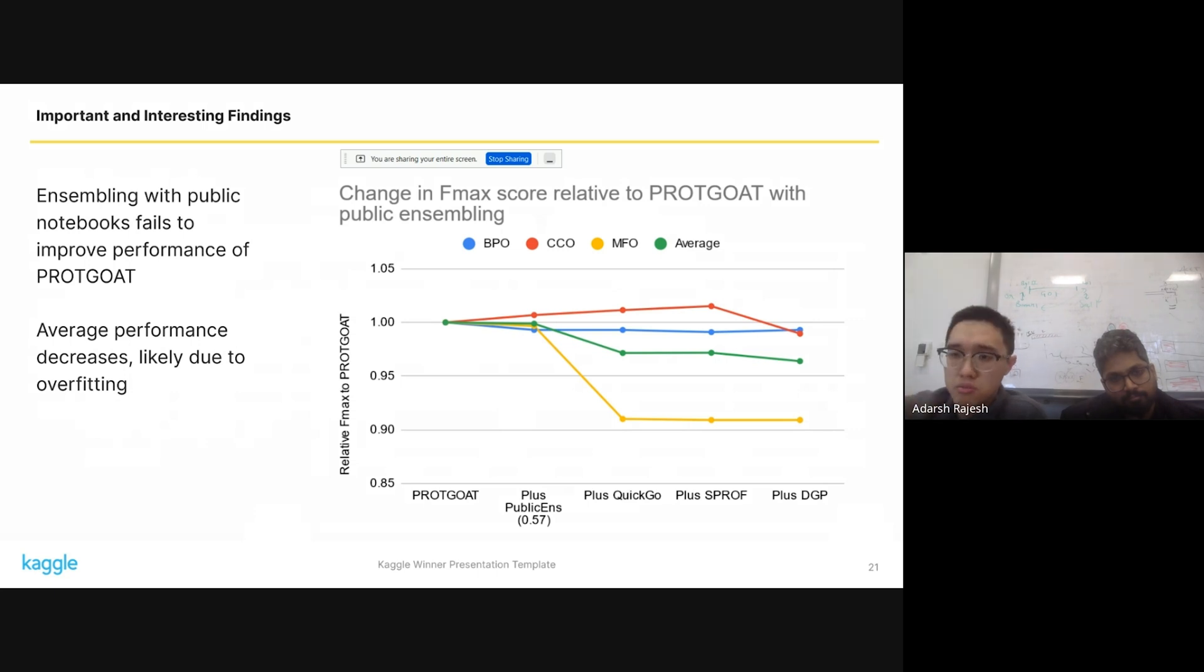We have also tried looking at, during the competition, we ensemble our model with various public data sets, public submissions based on these public notebooks on Kaggle. And in the end, we found that actually, this ensembling didn't really make a big difference to the performance of a model. In fact, it seemed to actually decrease performance overall with this ensembling, which suggests that these public submissions tend to overfit. They tend to overfit and was not that useful in the end for us.